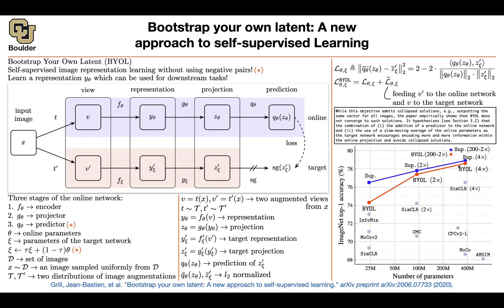Student: Just to be clear, backpropagation is happening only for the online network, right? Professor: Yes. The only parameters that are changing are θ. ξ is a moving average of θ. Student: So first we backpropagate, and then the new parameters are used for the moving average of the target network? Professor: Yes, that's correct. It's a bit weird how that works — and without any negative examples, which is impressive.